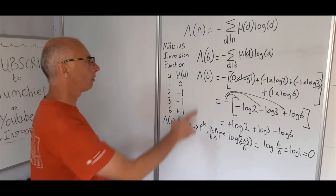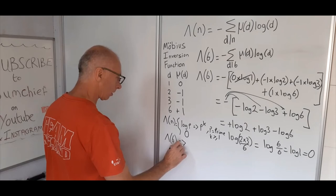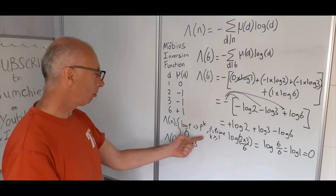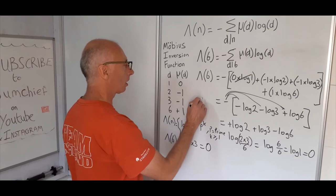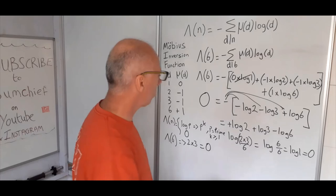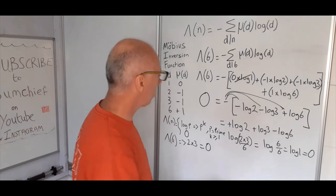In this case we're looking for Von Mangoldt of 6. We know that 6 is 2 times 3, and there's no prime 2 or 3 to the power of k that equals 6. So it takes the value of 0. Therefore Von Mangoldt function for 6 is 0, and we get 0 here. So that's worked on this occasion.